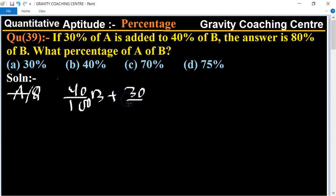...equals 80% of B, means 80 upon 100 times B. Cancel the zeros, which implies that...